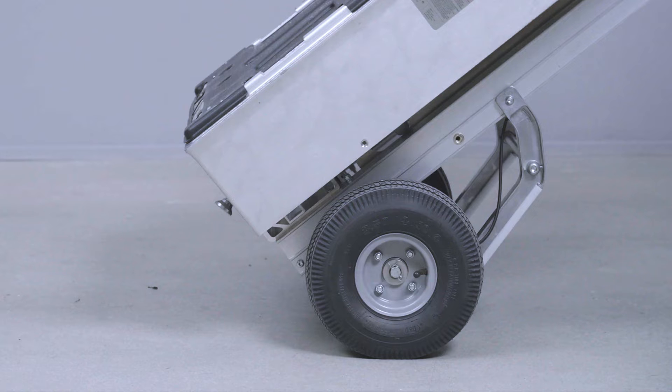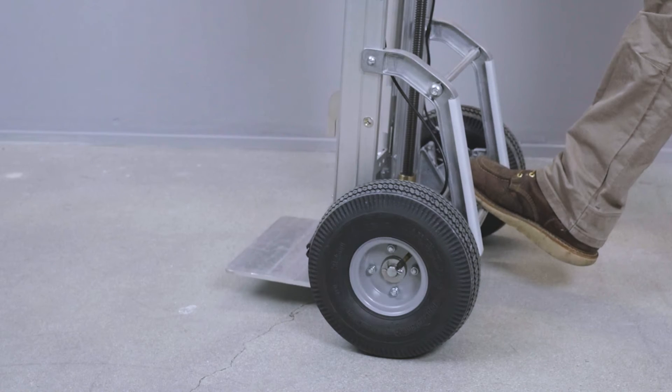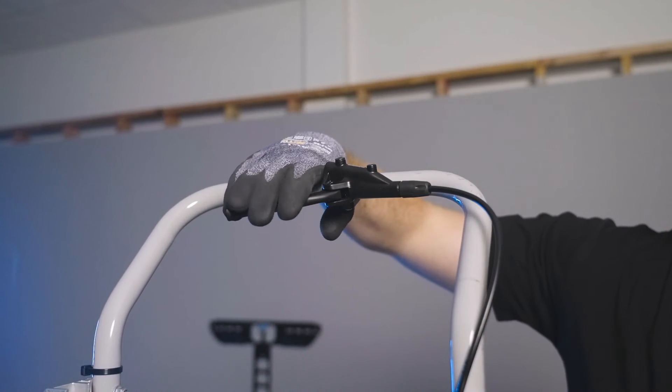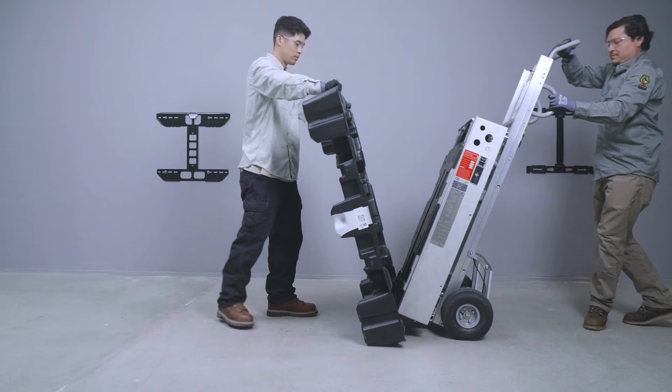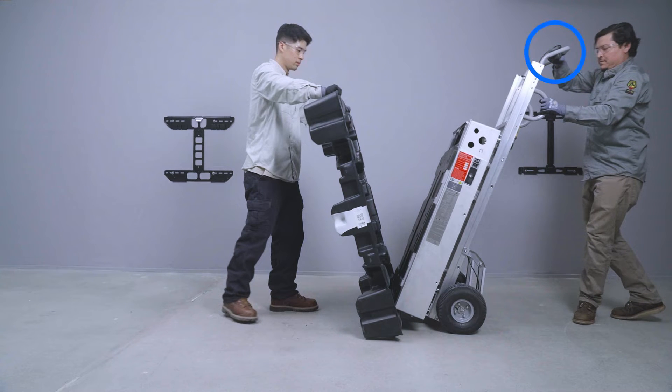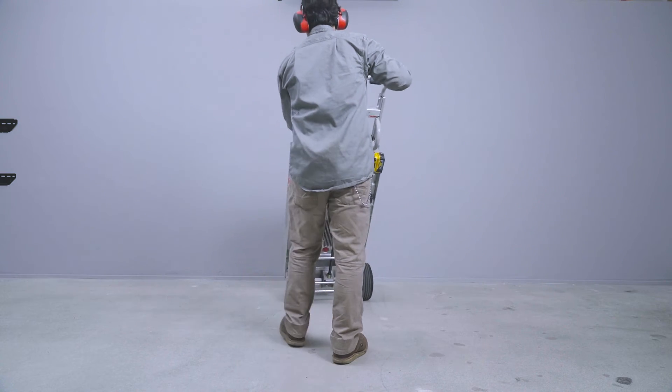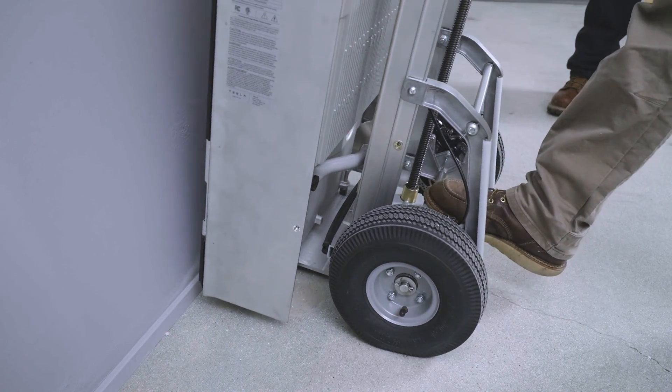When transporting Powerwall 3 with the Dolly, keep the lifting platform at the lowest level. Keep a hand on the brake while maneuvering Powerwall Dolly. Use the brake to control the Dolly when moving. Bring Powerwall 3 to the mounting location and gently position it against the wall.